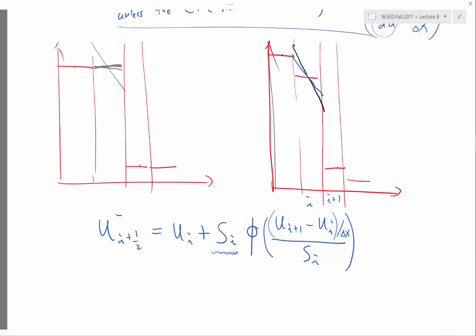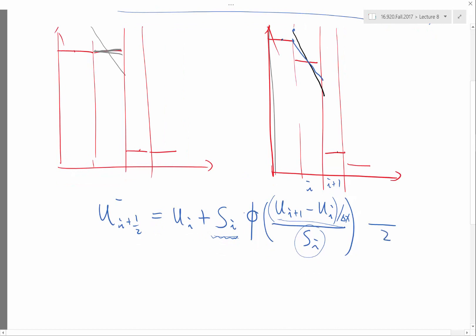So this is the slope between the volume average of two adjacent cells. This is the slope of what I would be using if I didn't have the limiter. And then I also need to multiply it by half of delta x.